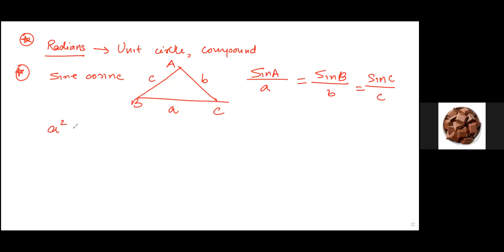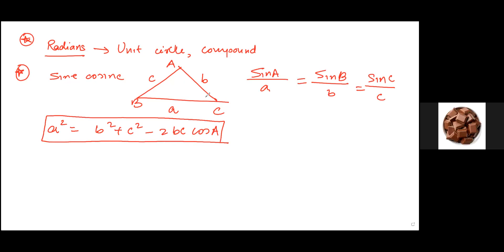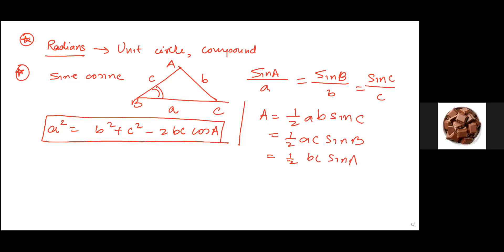The cosine rule is: a squared equals b squared plus c squared minus 2bc cosine of angle A. And the area formula: if you have been given two sides and the included angle, the area of the triangle is given by half ab sine C, or half ac sine B, or half bc sine angle A. So basically it's the product of the two sides times sine of the included angle. Those are the three basic relevant formulas.